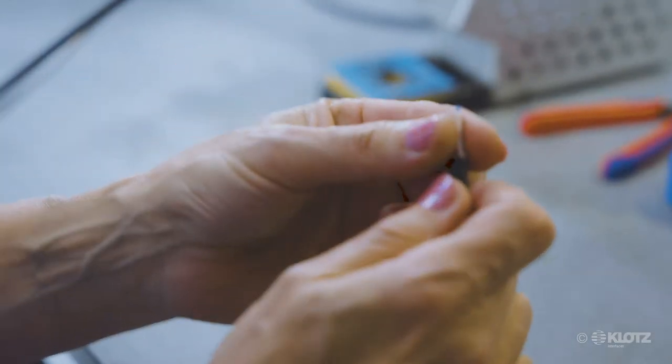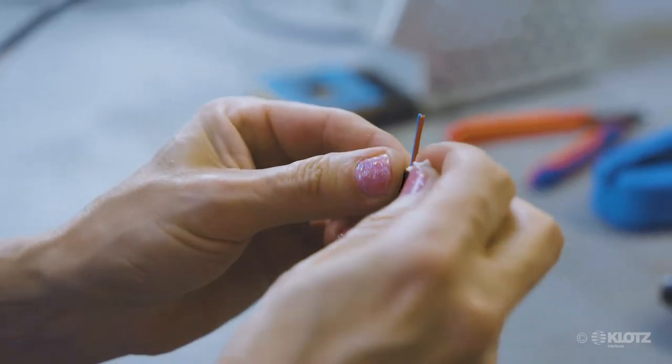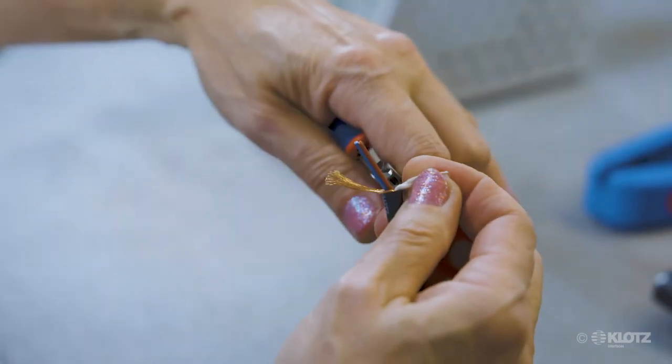In the next step, please twist and bend back the outer copper shield and cut the remainings of the white cotton filler.